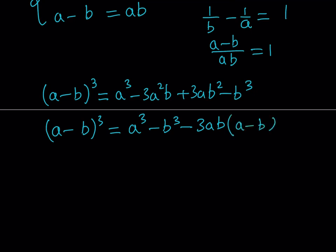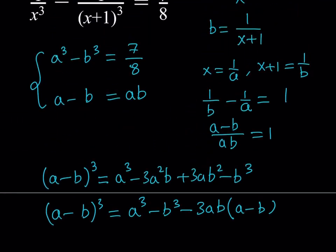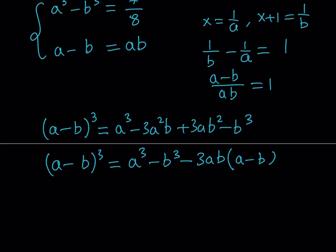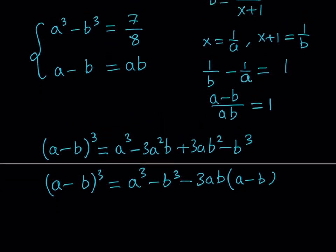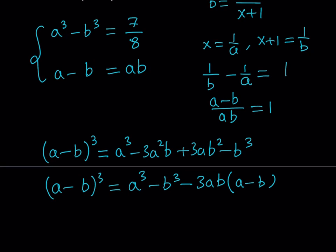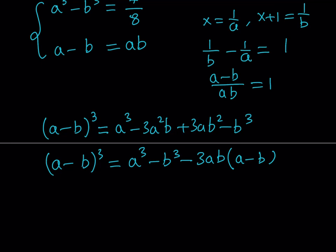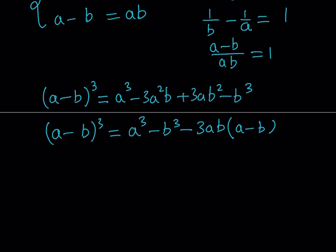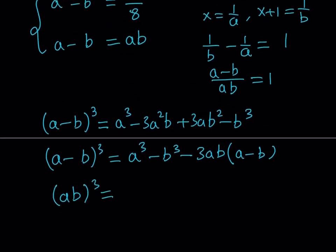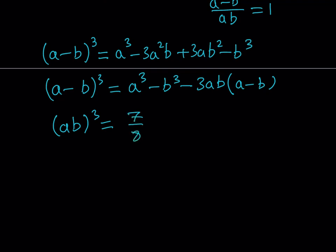We got a minus b appearing more than once, and we know a minus b equals ab. So let's replace a minus b with ab and a cubed minus b cubed with 7 over 8. After substituting, we get an equation in ab only — specifically ab cubed equals 7 over 8 minus 3 times ab squared. Isn't that nice? We can solve for this using substitution.